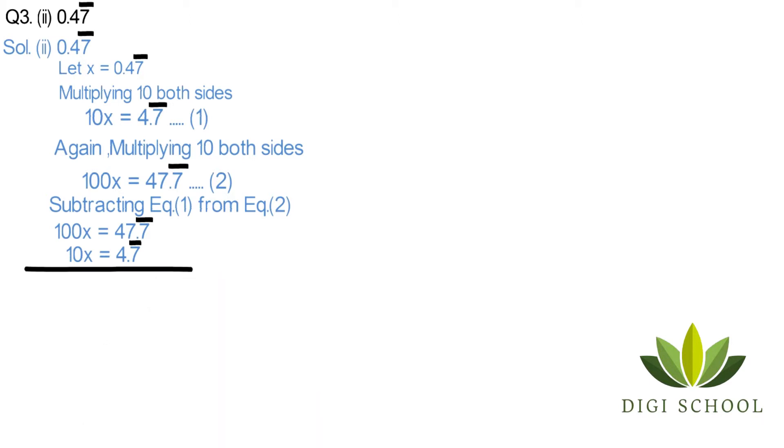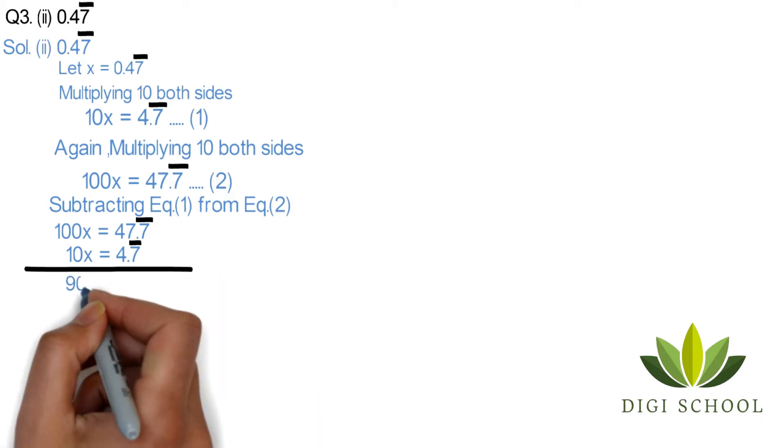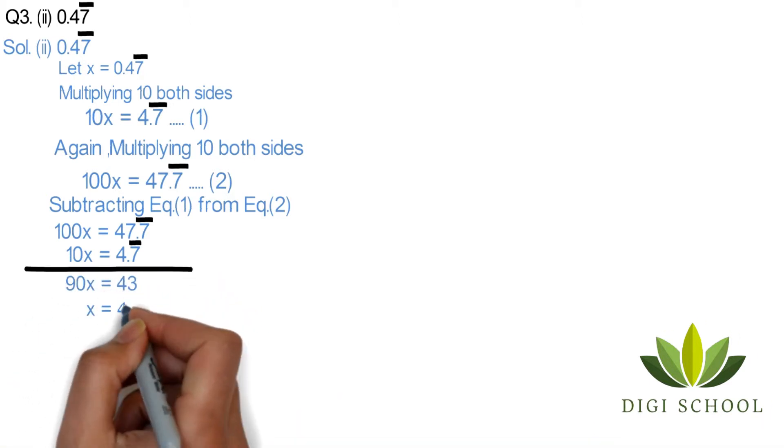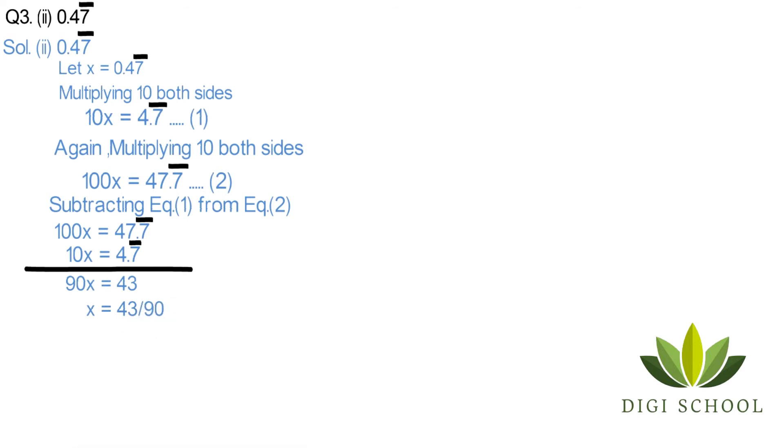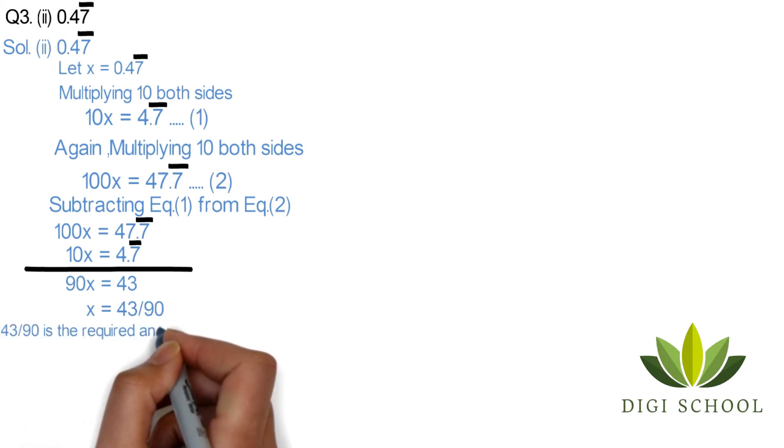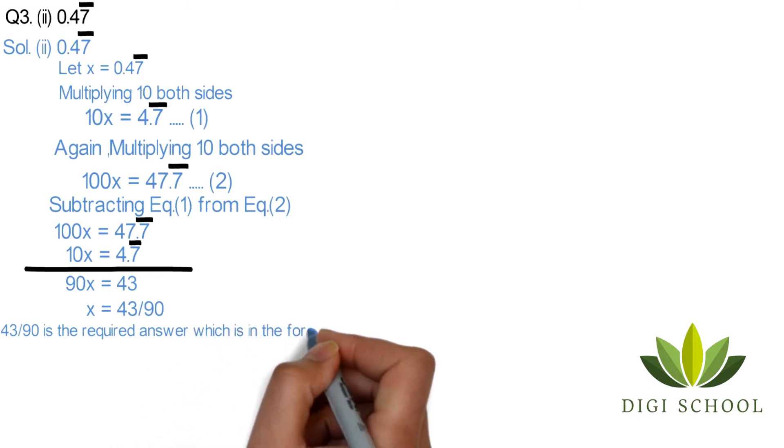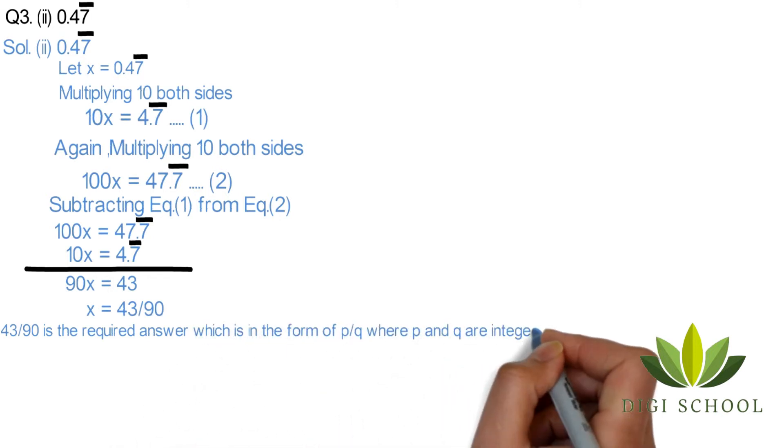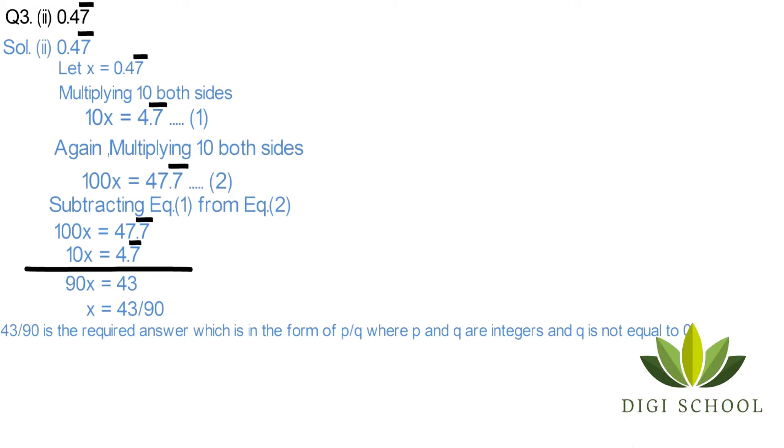Point seven bar will be cut off and the answer would be 90x equals 43, and x equals 43 upon 90. 43 upon 90 is the required answer, which is in the form of p upon q where p and q are integers and q is not equal to zero.